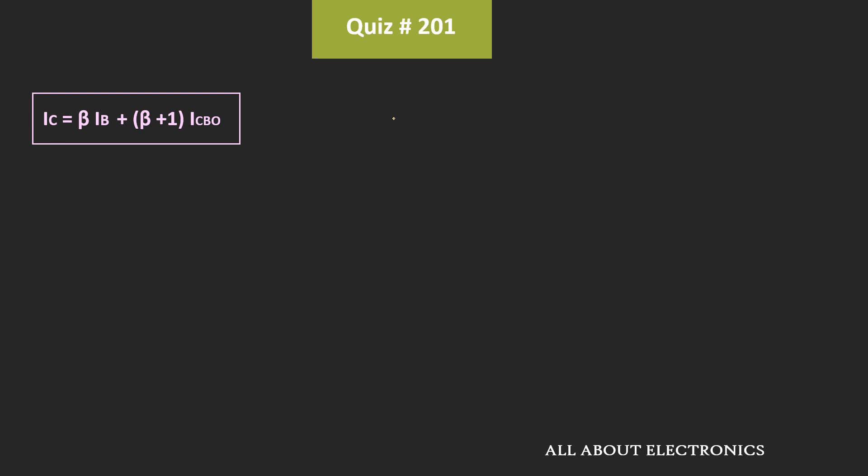Now, for the bipolar junction transistor, the stability factor S can be given as ∂Ic divided by ∂Icbo by keeping the voltage Vbe and the β constant.